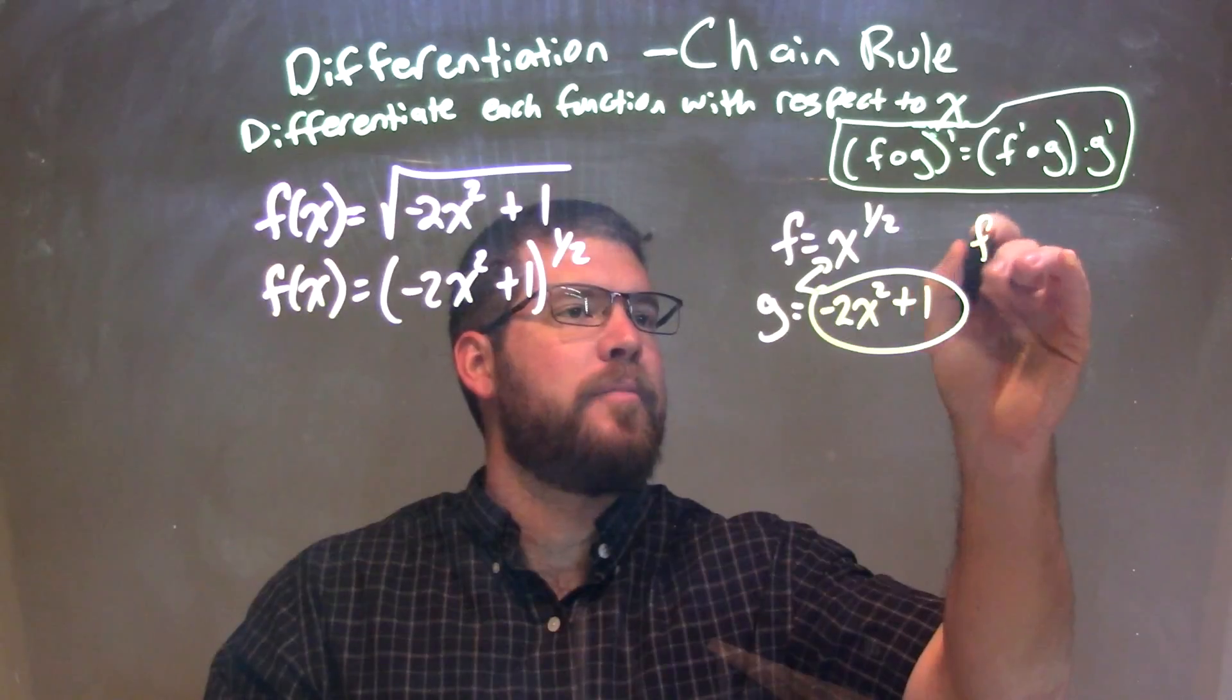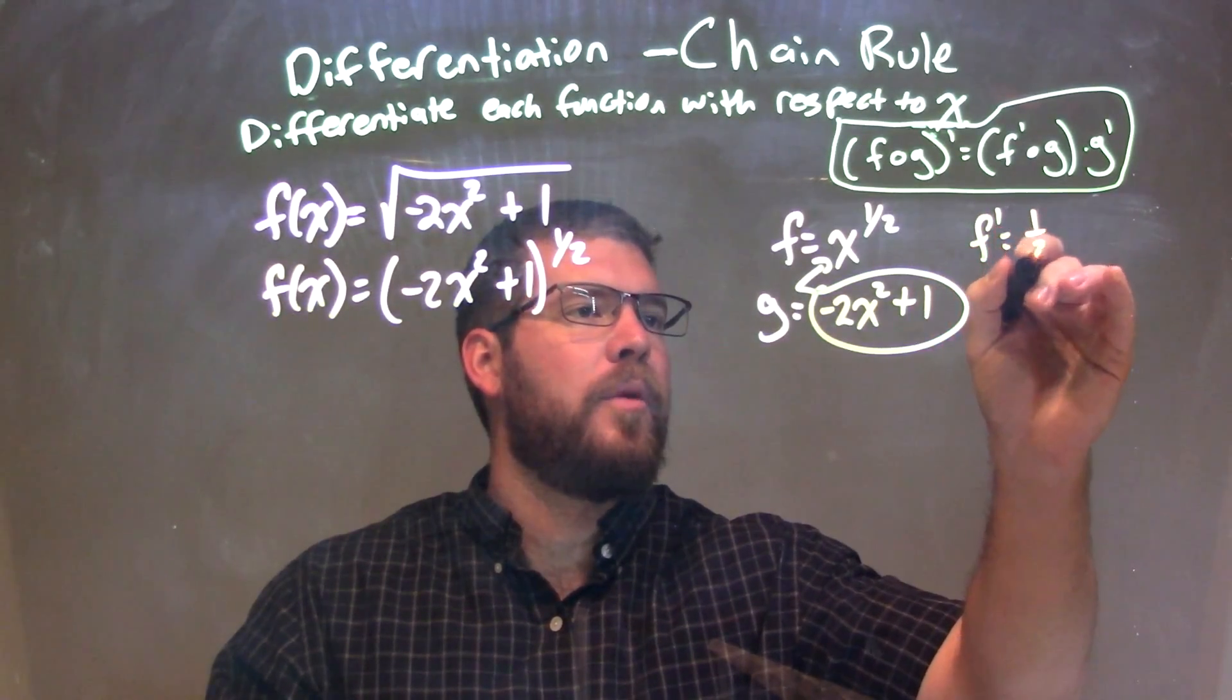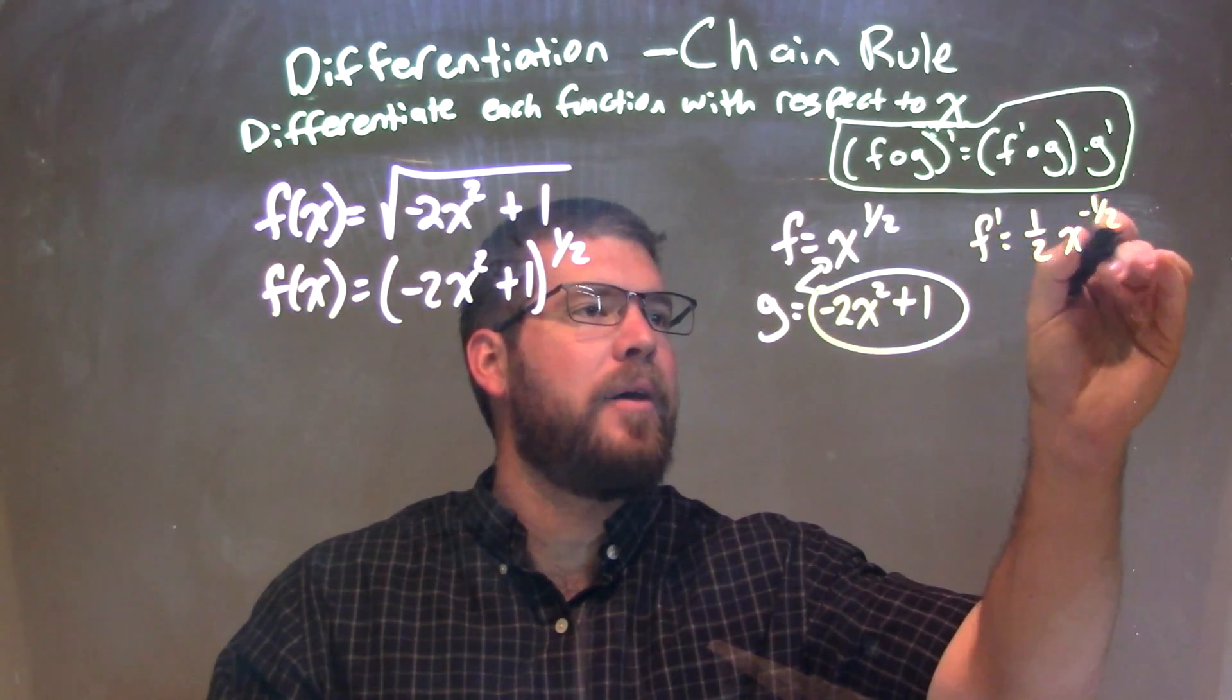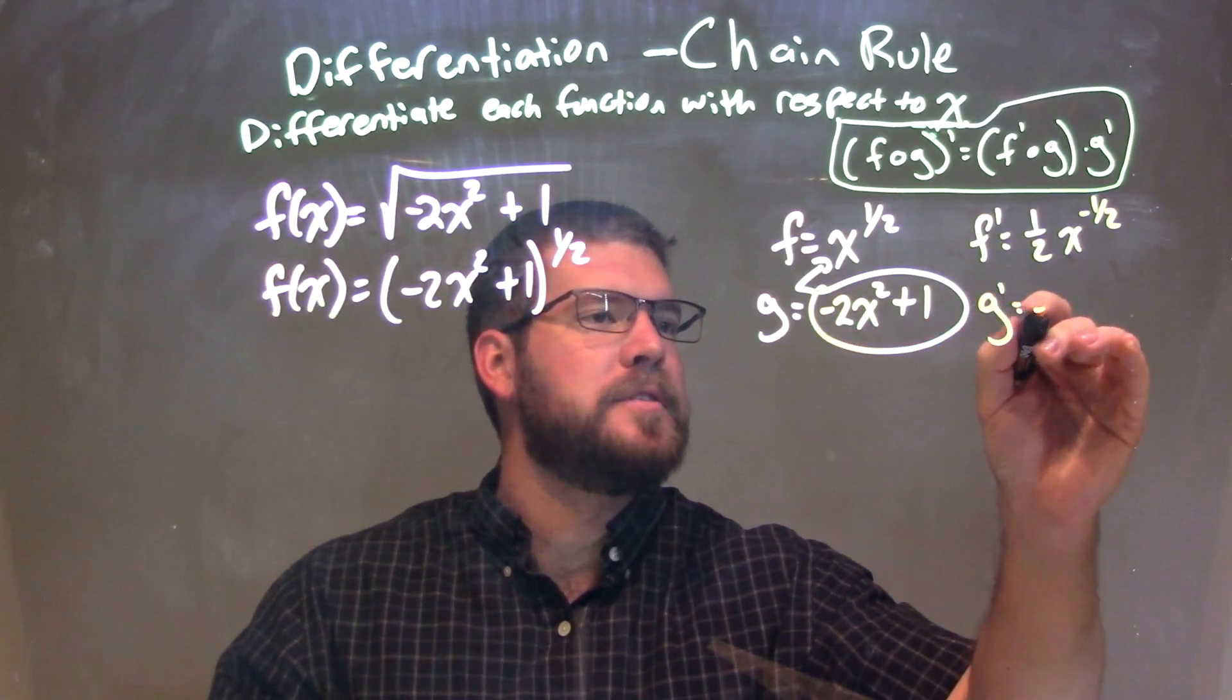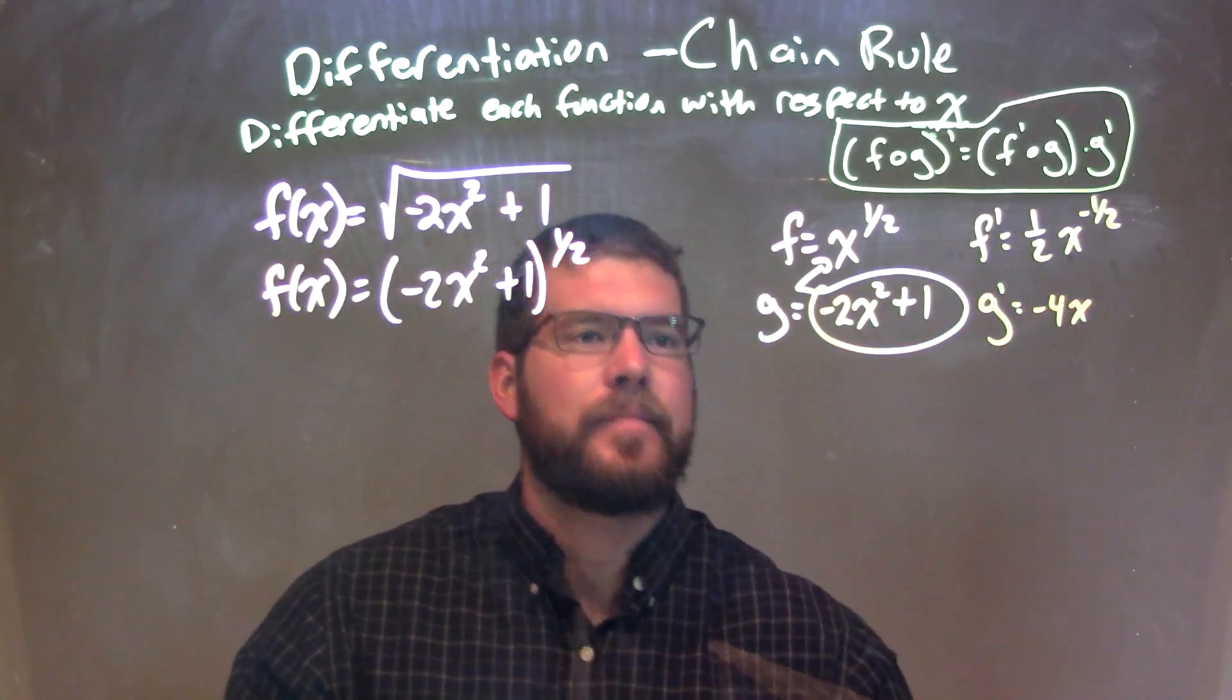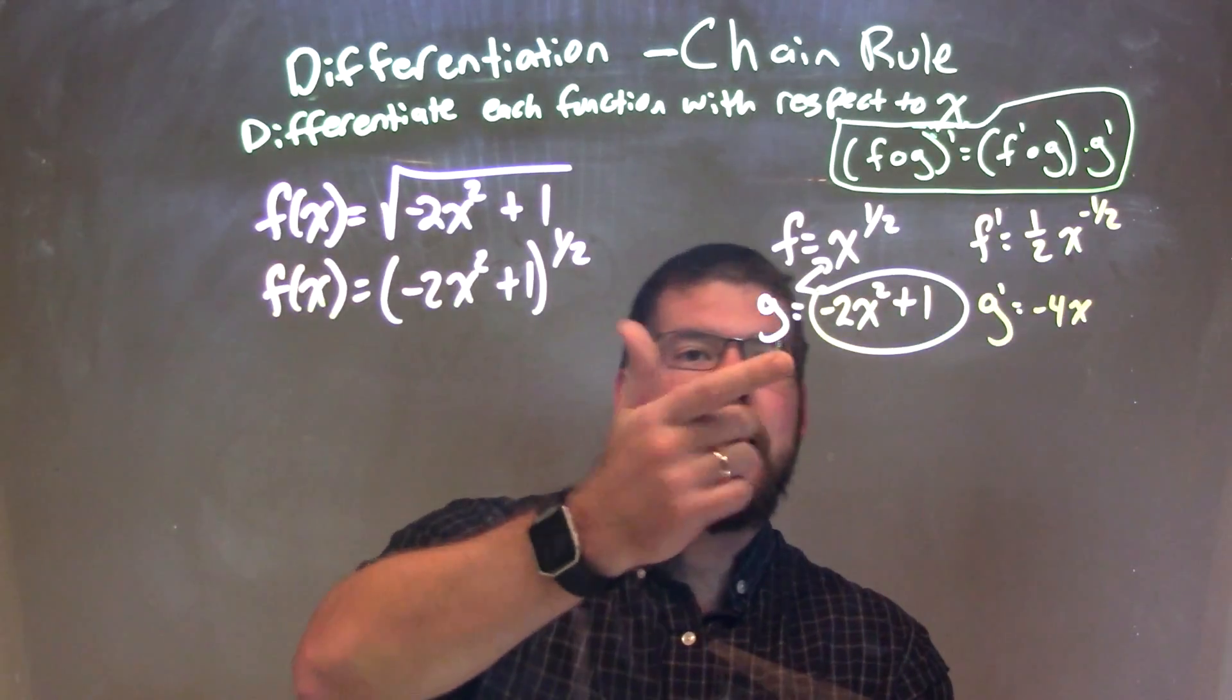So once I have this, let's go find f prime. f prime, power of 1 half x to the negative 1 half power. Pretty simple. And then we find g prime as well, which is negative 4x. Again, using the power rule.